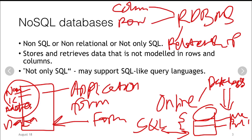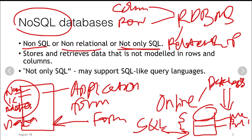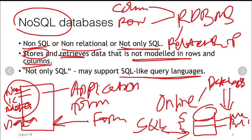In recent years, the overflowing of unstructured data has become a major issue. Hence, here comes NoSQL to the rescue. NoSQL is defined as non-SQL, non-relational, or not only SQL. It stores and retrieves data that is not modeled in rows and columns only. Not only SQL may also support SQL-like query languages.